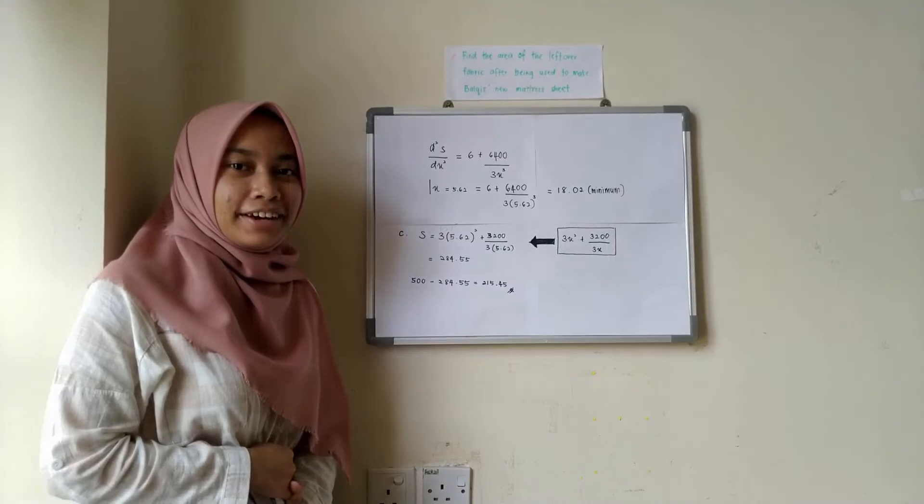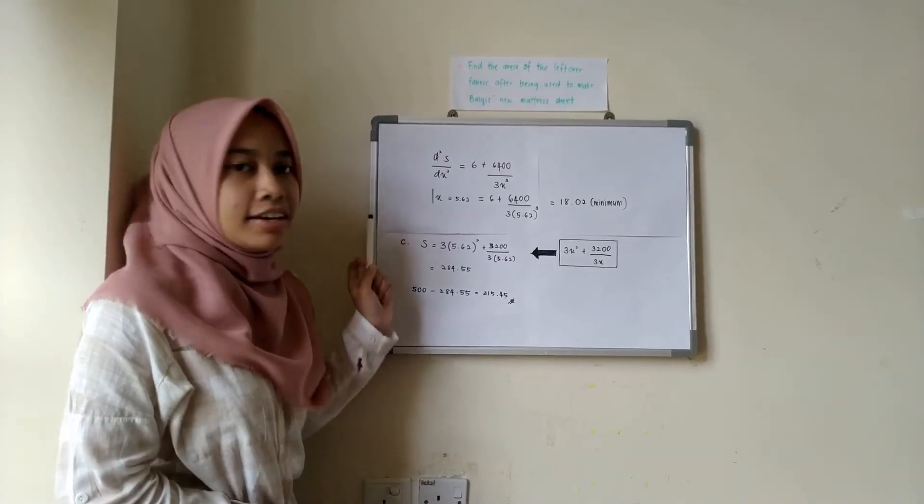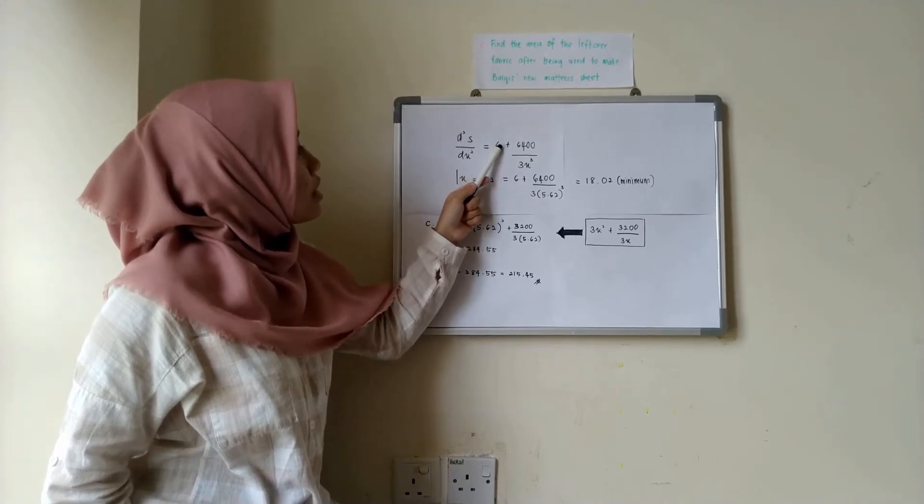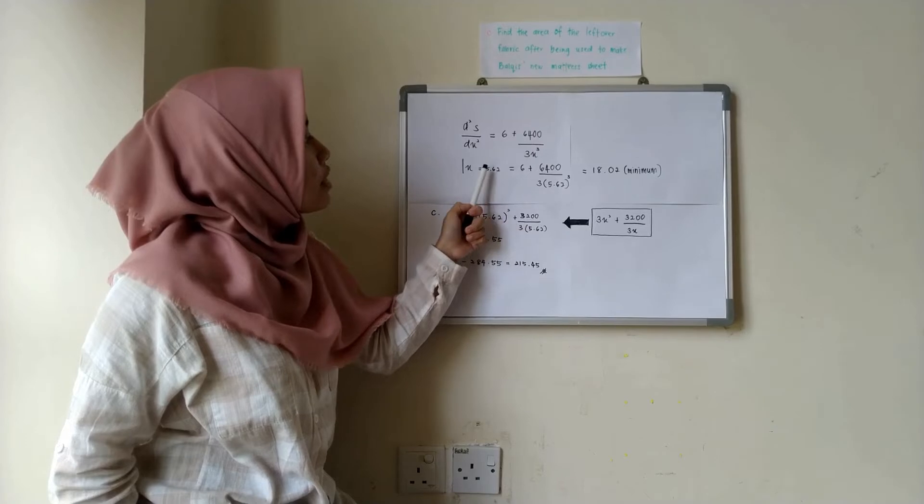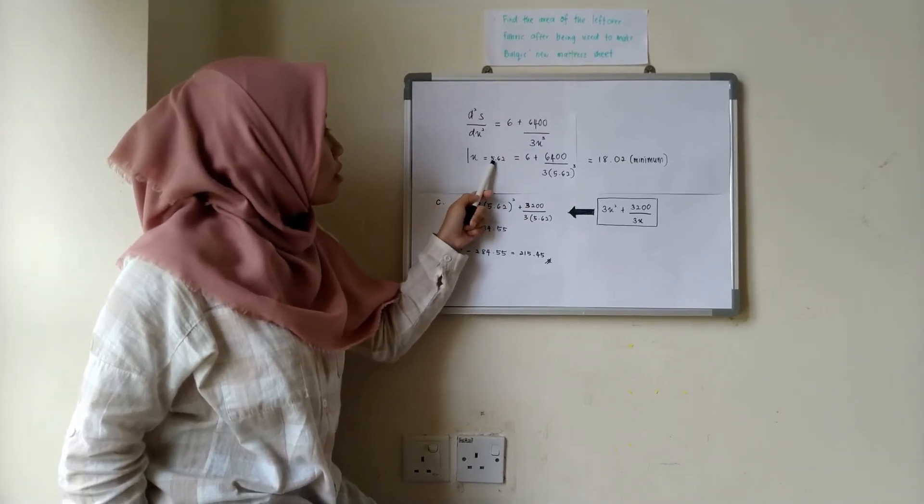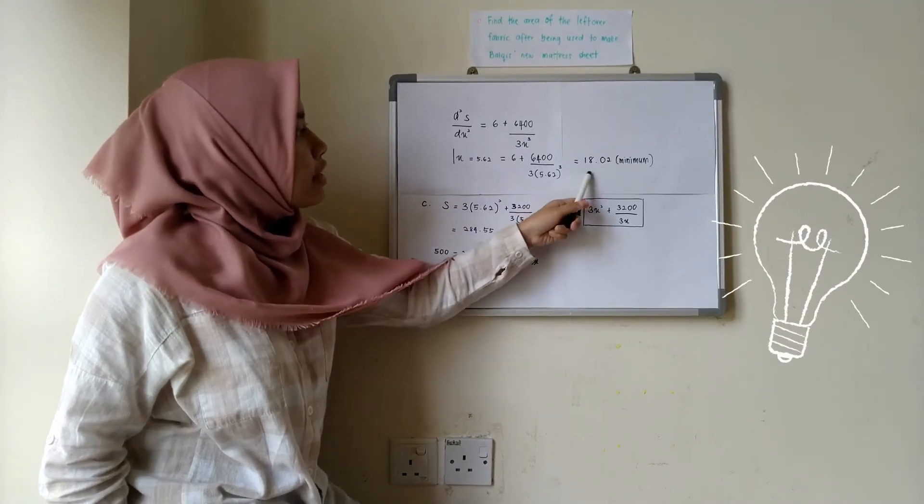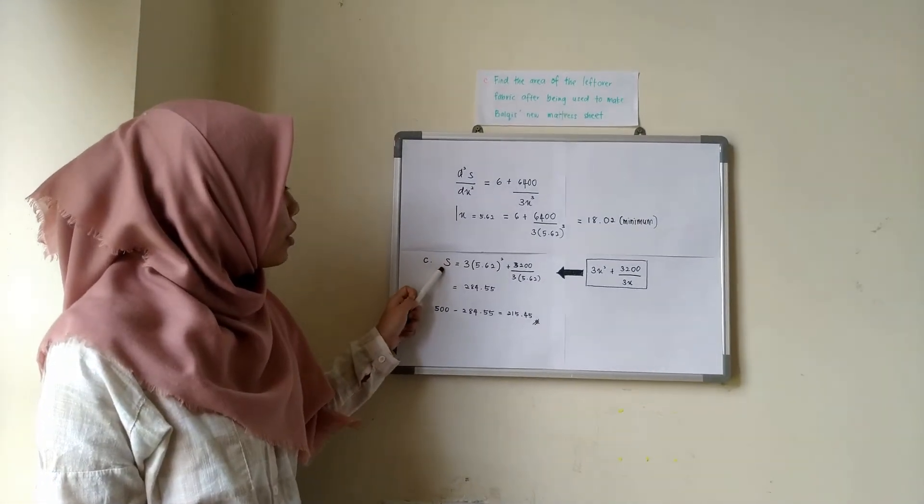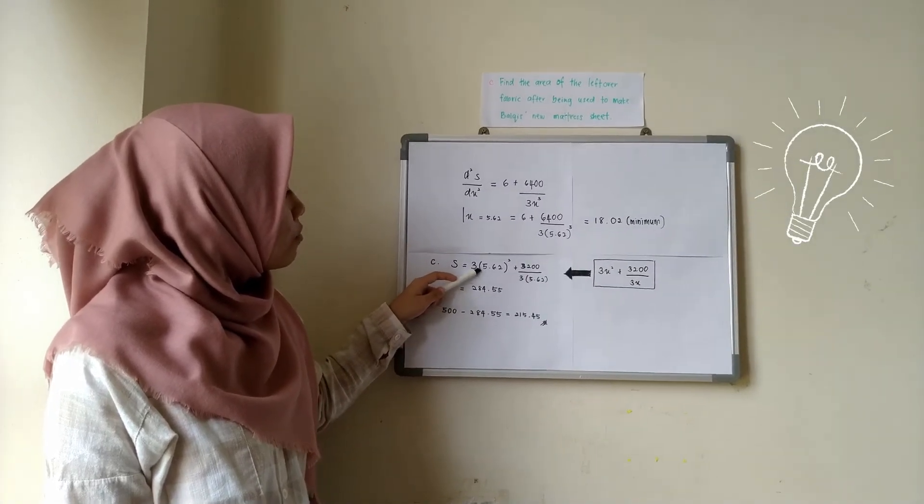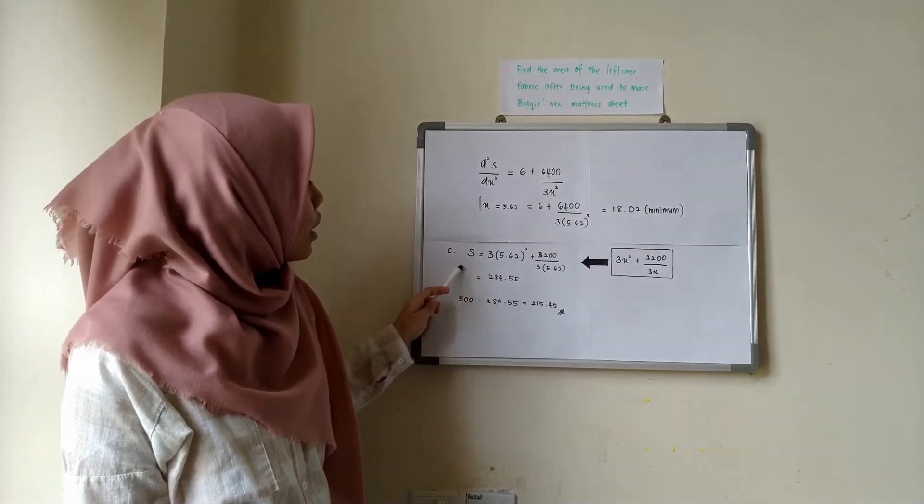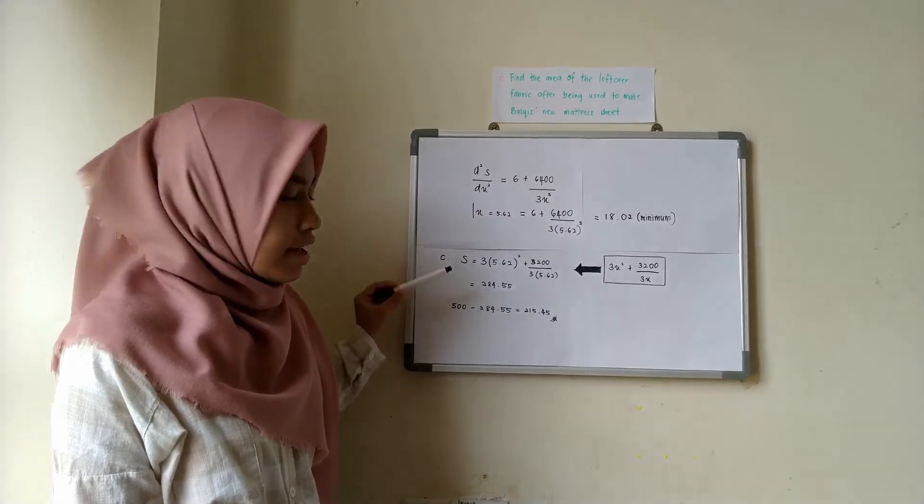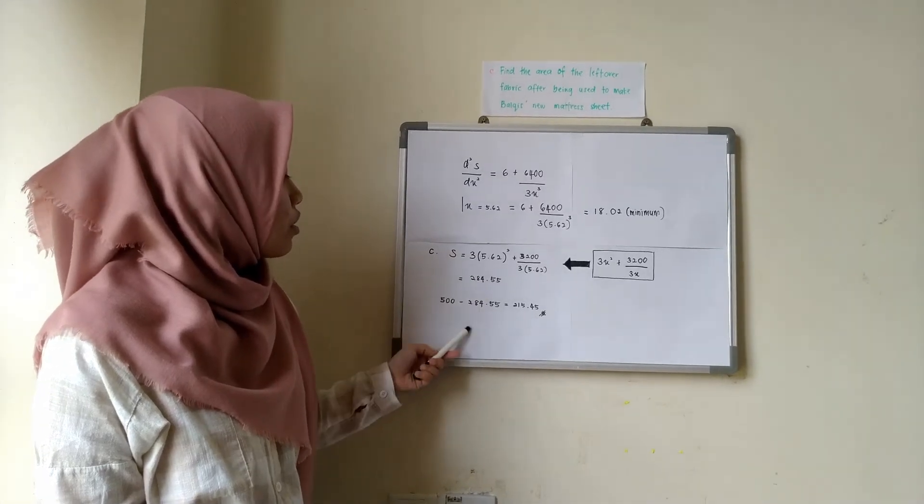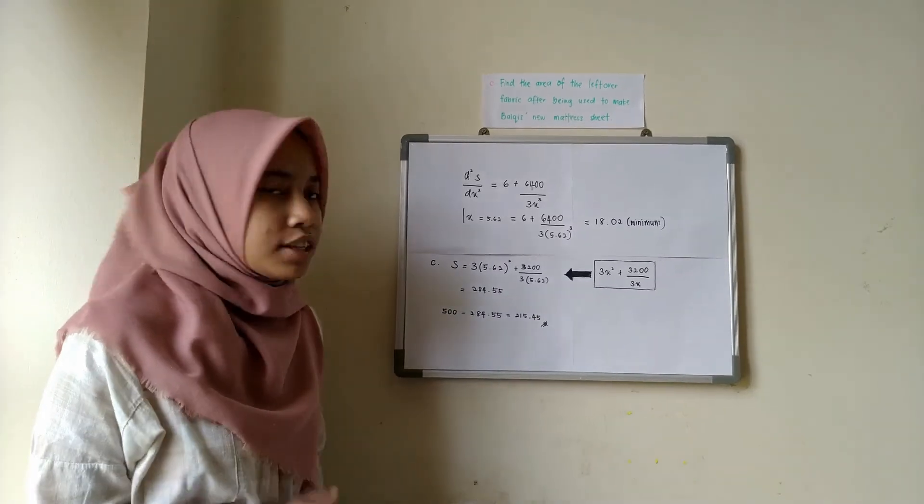My name is Adina Kaisawatomi Yakub. So in order to determine whether the value of x minimizes the total surface area or not, we have to do the second derivative test. And we will get the value of 6 plus 6400 divided by 3x cubed. And substitute x equals to 5.62 into this equation, we will get 18.02, which is positive, meaning that it is always minimum. For question C, to find the total surface area, we have to substitute the value of x 5.62 into this equation, and we will get 284.55. And to get the leftover fabric used, just simply minus 500 with the total surface area, and we will get 215.45 cm squared.